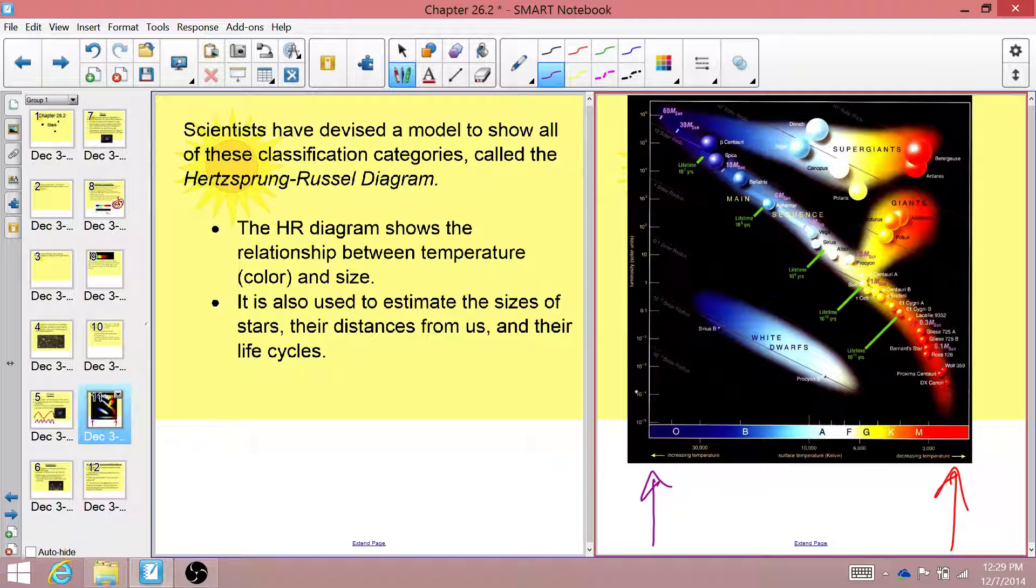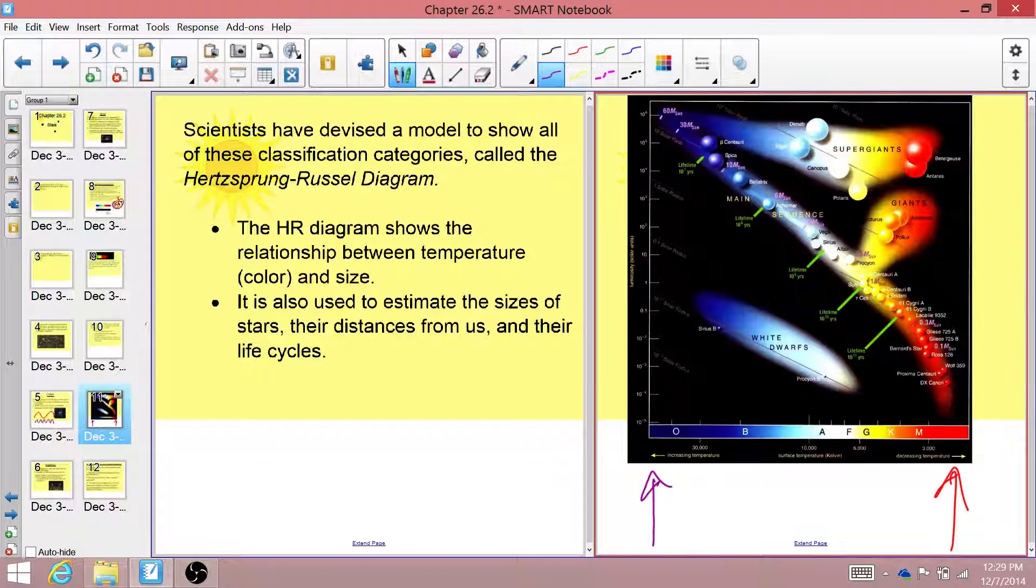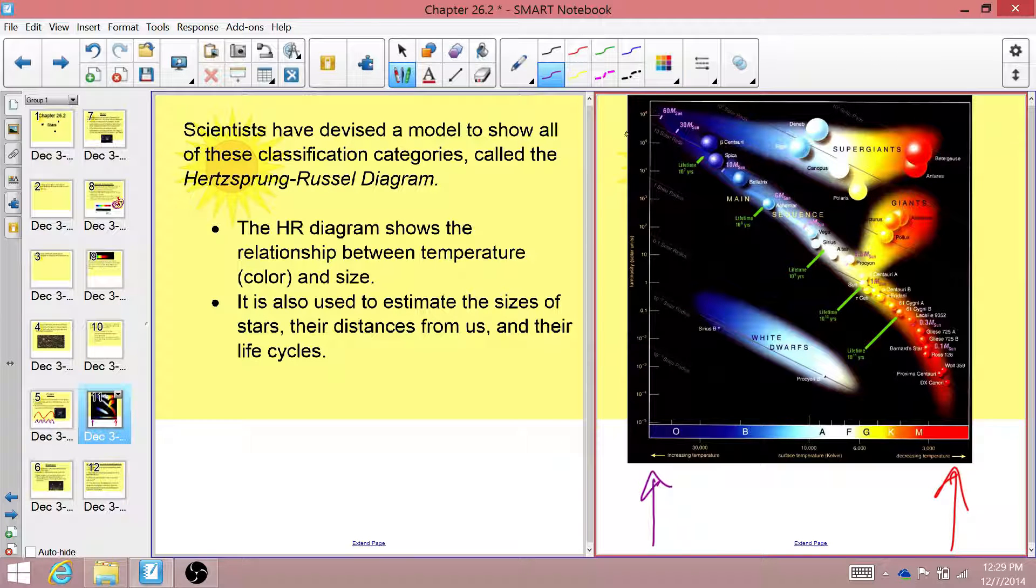Now on the y-axis, this has luminosity, or brightness. How bright is that star? And we can actually determine, or I guess assume in certain situations, that the brighter a star is, the larger it is.